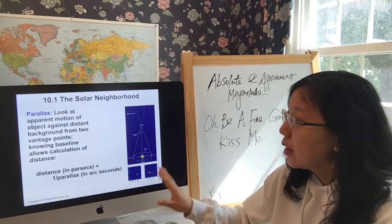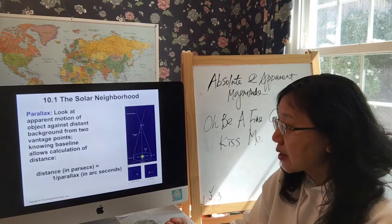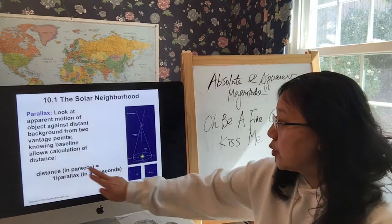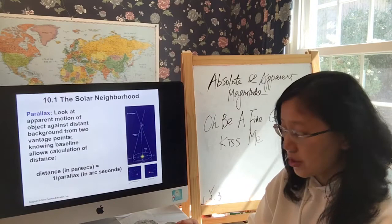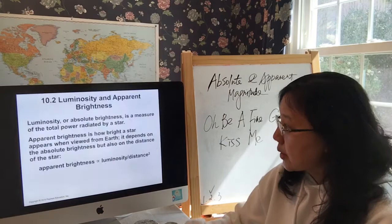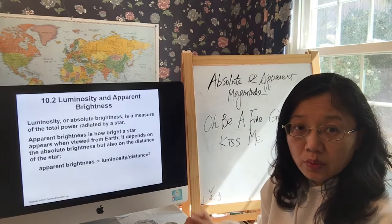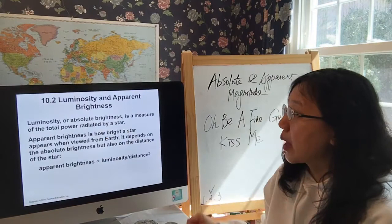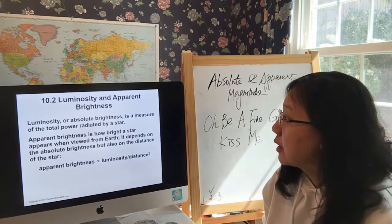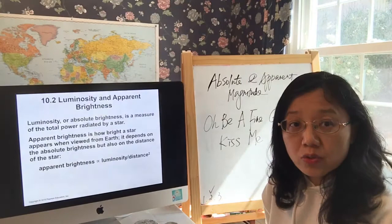The first thing I covered was parallax — we can use parallax to calculate the distance of a star. Pay attention: the distance has to be in units of parsecs and parallax in arc seconds. The second, most important concept was luminosity and apparent brightness. Luminosity, or absolute brightness, tells you the actual amount of light a star emits.